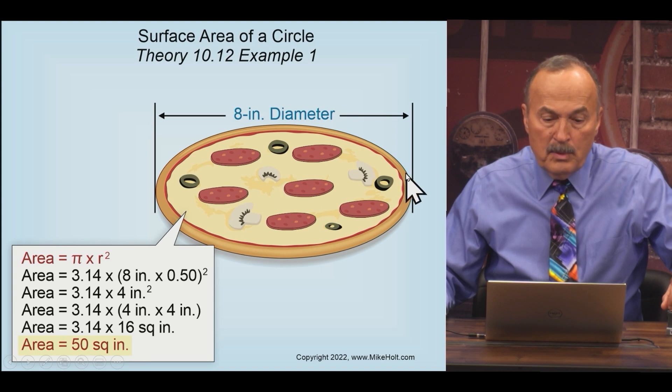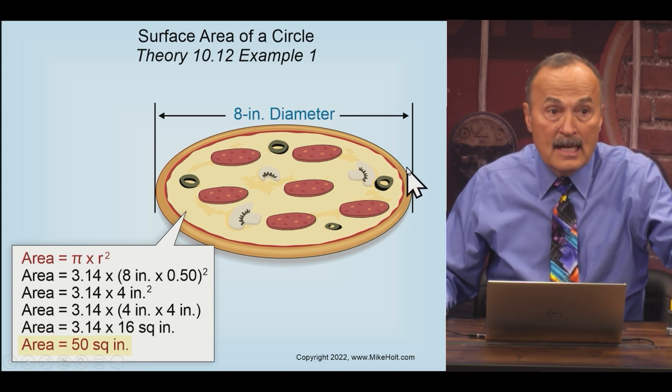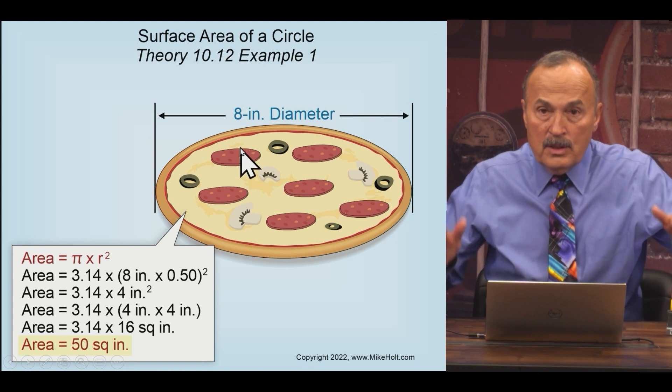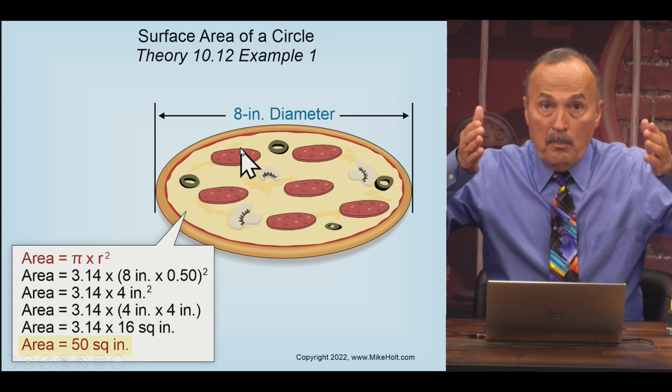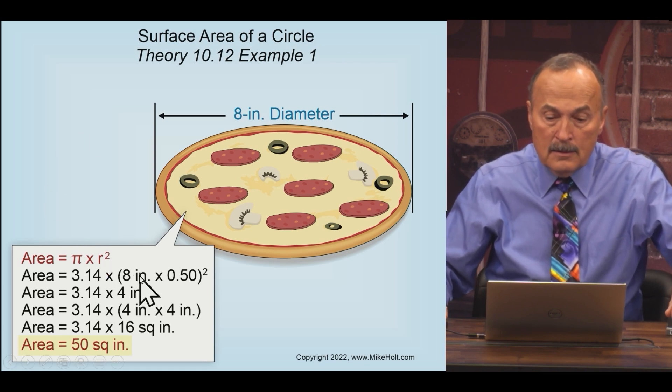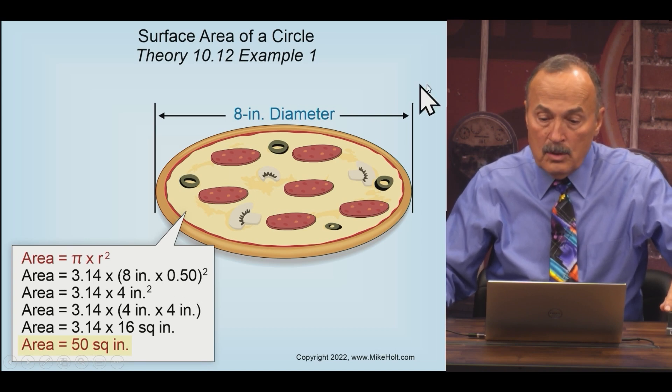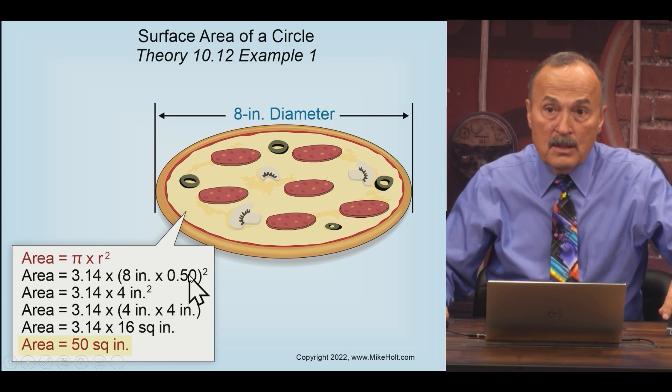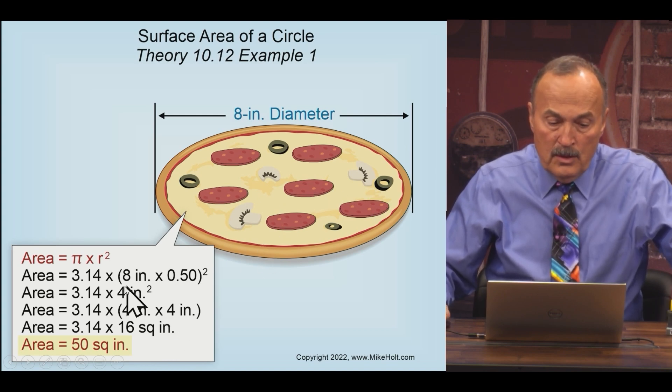The four inches is the radius, because the radius is half the diameter. The diameter is from the outside to the outside edge of a perfect circle. The formula is pi times the radius squared, and the radius is half. So you can see the eight inches, which is the diameter, times 50% because it's half of that value.